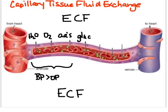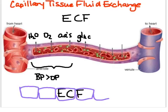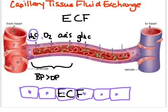When these substances diffuse into the ECF, there are cells surrounding this entire structure, but there is a space between the capillary bed and the cells that surround the tissues. Within that space, things like water, oxygen, amino acids, and glucose are going to be taken up by these surrounding cells.